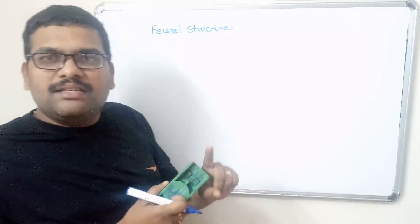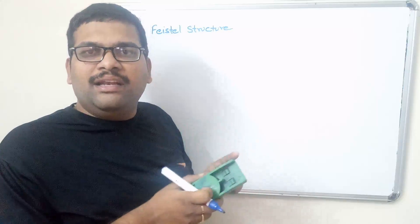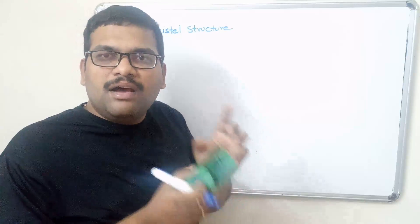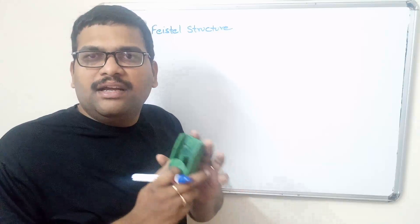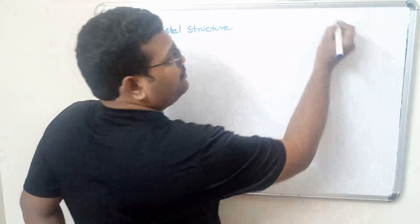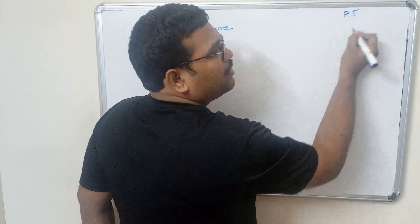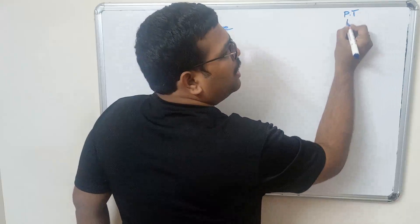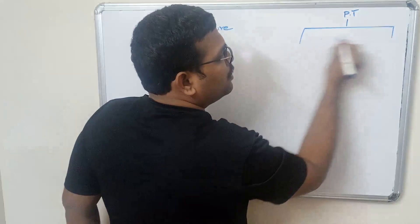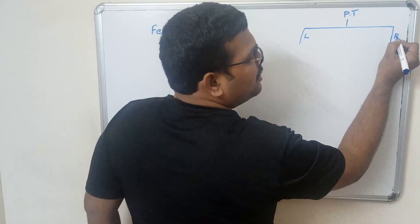In the Feistel structure, the first step is the plaintext block is processed in two equal halves. So the first step is we have to divide the plaintext into two equal halves — this is the left half and this is the right half.